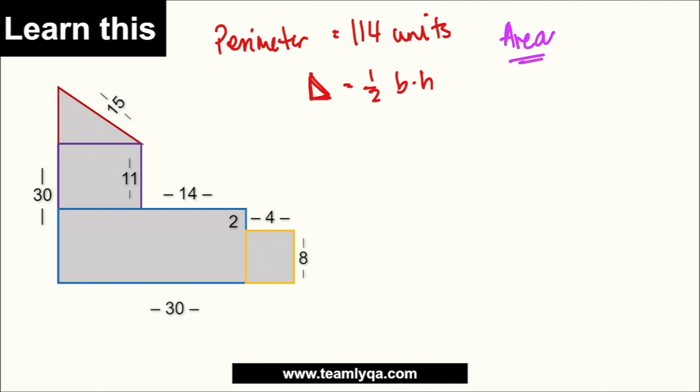So, sabi natin 30 itong buong haba na ito. Ngayon, kung pantay siya dito, sa line na ito, ano ang meron? Para makuha ko itong part na ito, na yan lang, all I have to do would be to look at kung ano yun na yung given. Sabi dito, ito daw ay 8, ito ay 2, ito ay 11. So, ibig sabihin, itong height na ito would be 8 plus 2, 10 plus 11. That would be 21.